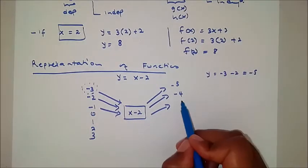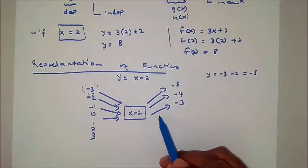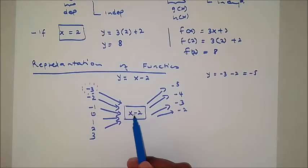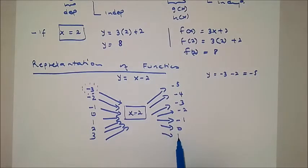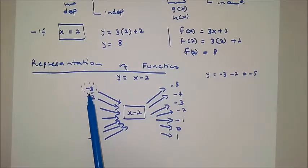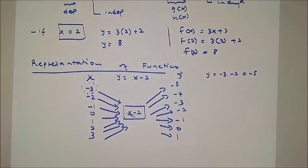Continuing the table: x equals negative 1 gives y equals negative 3; x equals 0 gives negative 2; x equals 1 gives negative 1; x equals 2 gives 0; x equals 3 gives 1. These are your x values — the inputs — and the corresponding y values are the outputs. Notice that one value of x corresponds to exactly one value of y; there are no cases where the same x gives two or three different y values.